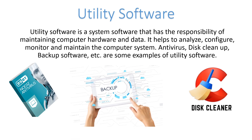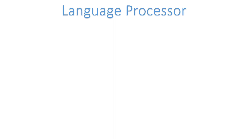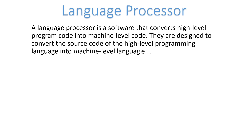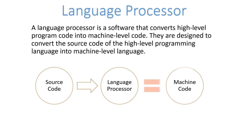Language processor is a software that converts high-level program code into machine-level code. It is designed to convert high-level programming language into machine-level language because the computer does not understand high-level language. The source code written in a high-level language is translated by the language processor into machine code so the computer can understand and execute the instructions.